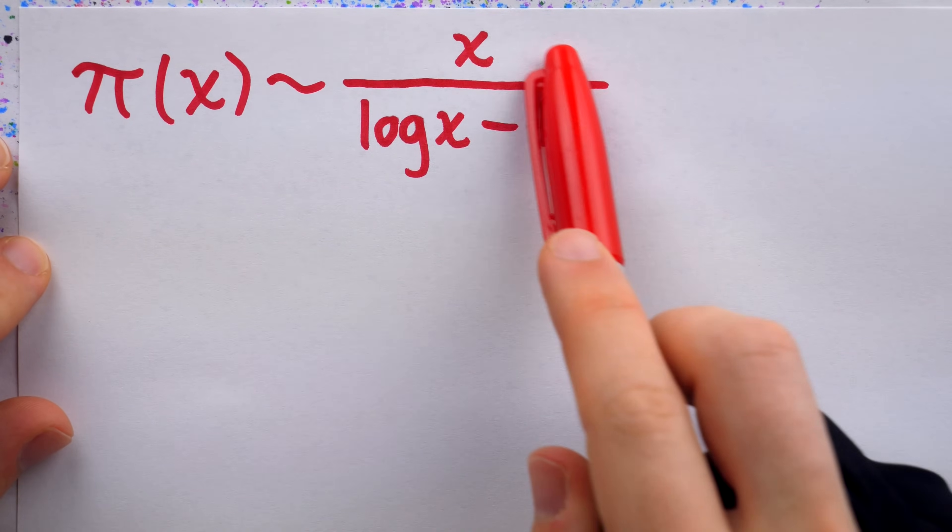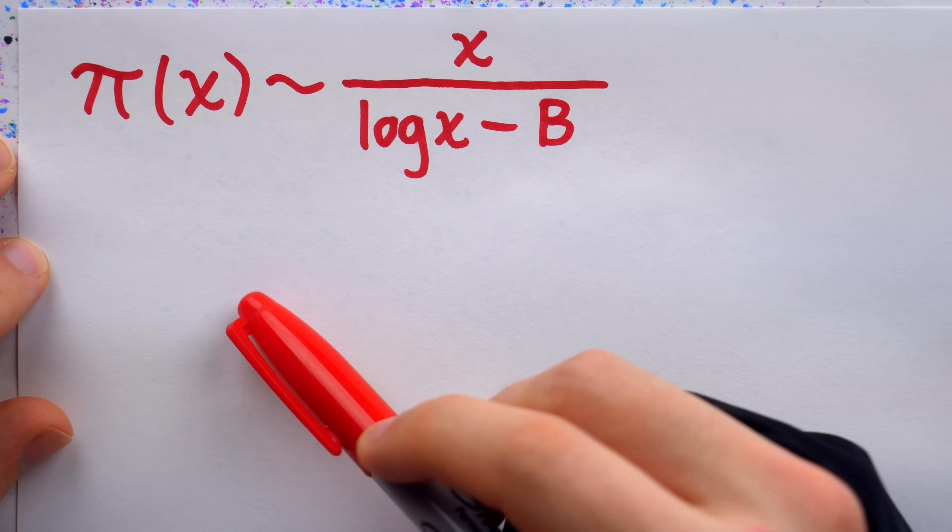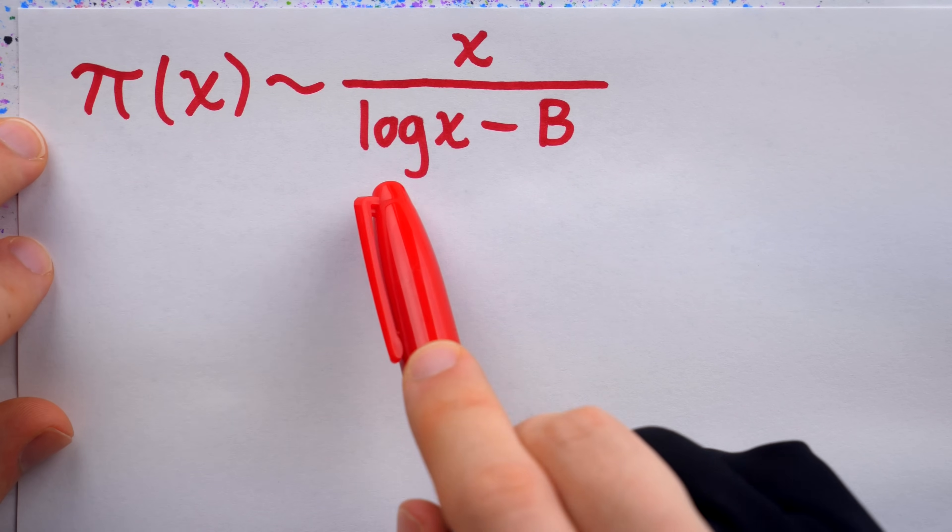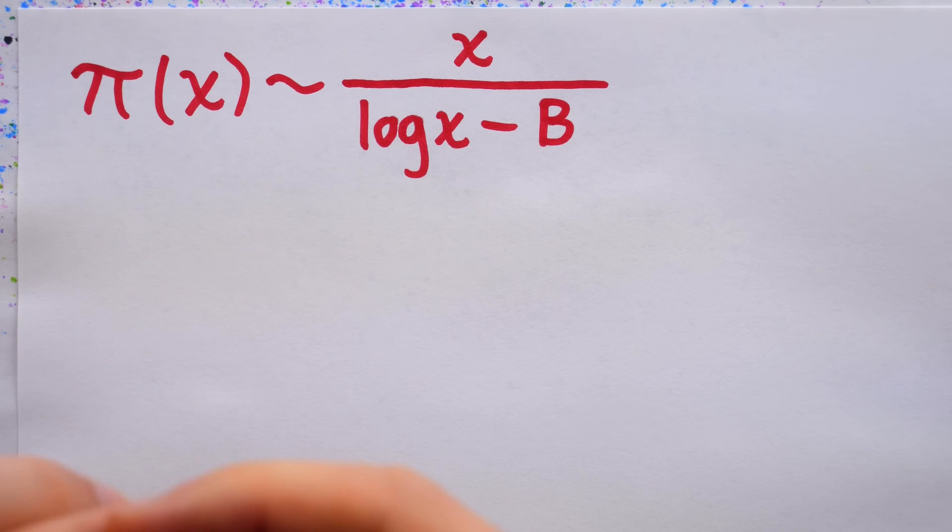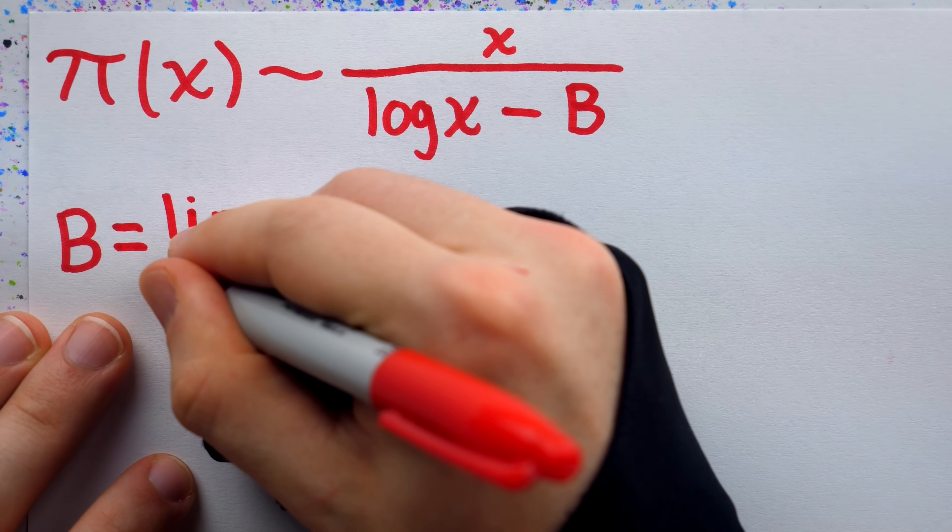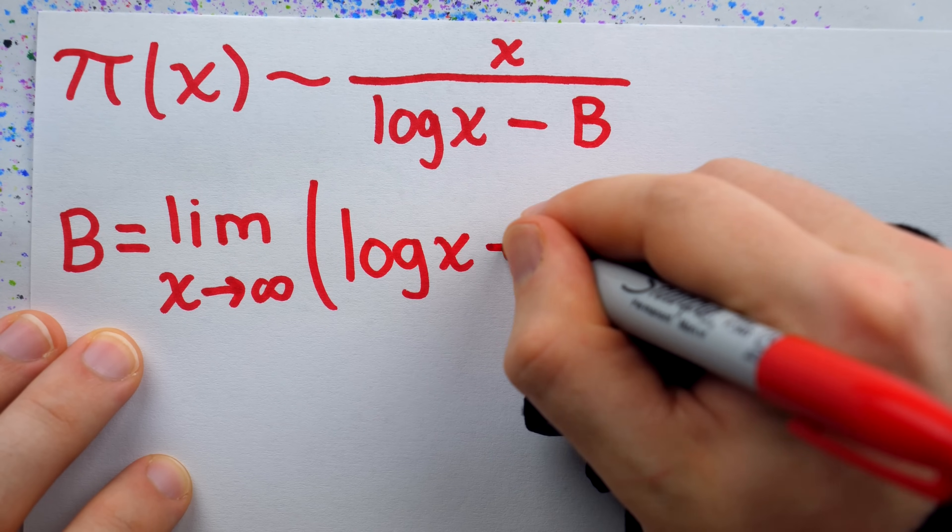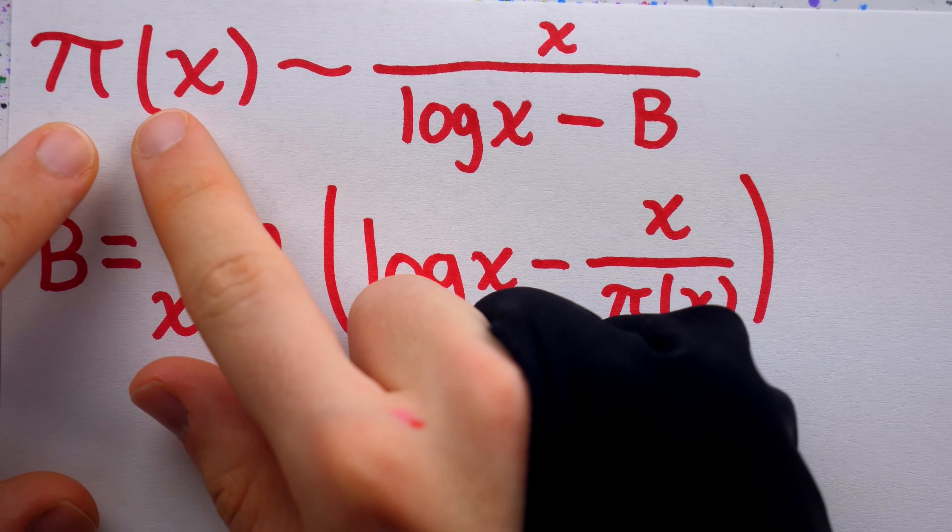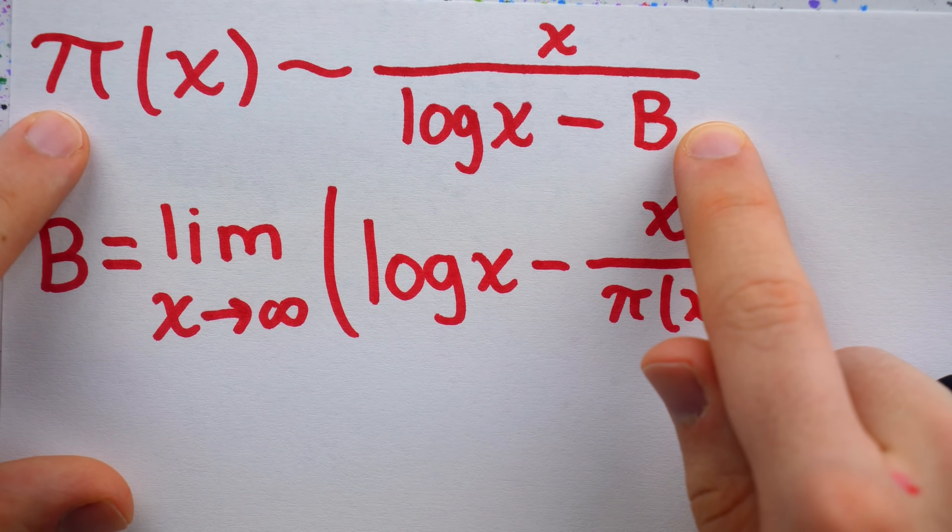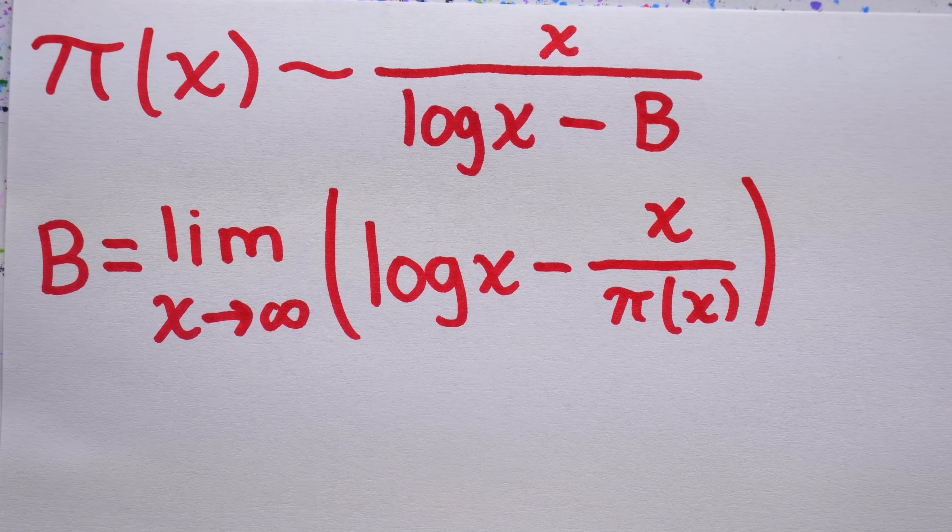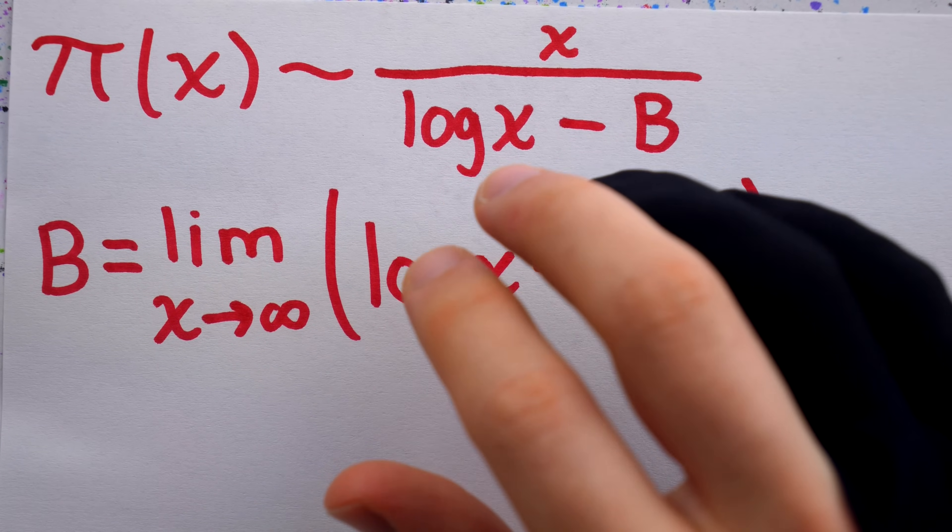Anyways, if we treat this for a moment like an equation, and do some basic algebra to solve for b, multiply both sides by the denominator, divide everything by pi of x, move the log x over, and negate everything, we find that b, if it exists, would have to equal the limit as x goes to infinity of log x minus x divided by pi of x. Of course, we have x going to infinity, since this is a statement about asymptotic behavior, also sometimes called long term or end behavior. And based on prime number tables at the time, Legendre had good reason to believe in his approximation of about 1.08366.